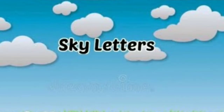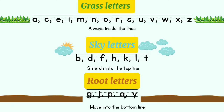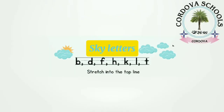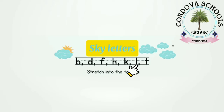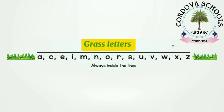According to the lines, letters are divided into three categories: some are sky letters, some are grass letters, and some are root letters. The letters which are written on the first three lines are called sky letters. In lowercase, there are seven sky letters: b, d, f, h, k, l, and t.